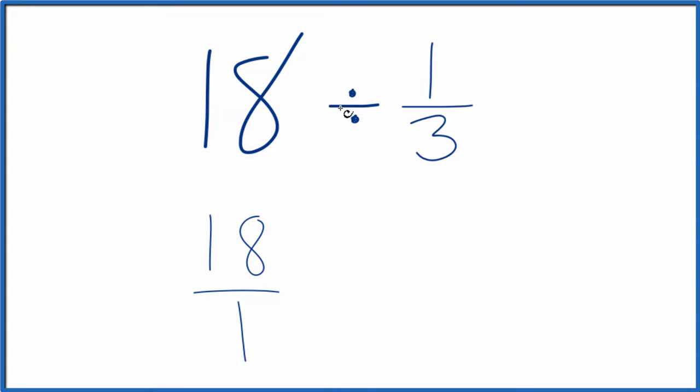Next we're going to multiply instead of divide, and we're going to multiply by the reciprocal of 1 third. To take the reciprocal of a number, we move the numerator down and the denominator up. So we have 3 over 1. So the reciprocal of 1 third is 3 over 1.